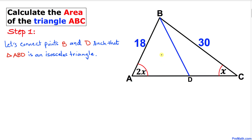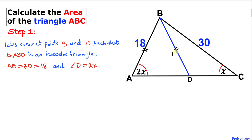Since triangle ABD is an isosceles triangle, this side BD is going to be equal to AB. If AB is 18, BD is 18 as well. If angle A is 2x, then angle D is going to be 2x as well.